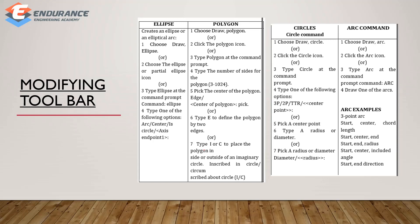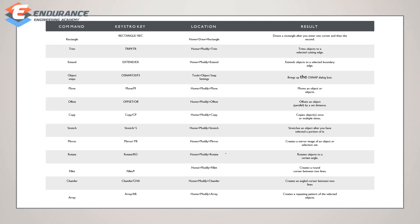If you install AutoCAD software, you can see the basic software. The shortcut commands are: rectangle is REC, trim is TR, extend is EX, object snap is F3 or OS, move is M, offset is OFF, copy is CT, stretch is S, mirror is MI, rotate is RO, fillet is F, chamfer is CH, array is AR.